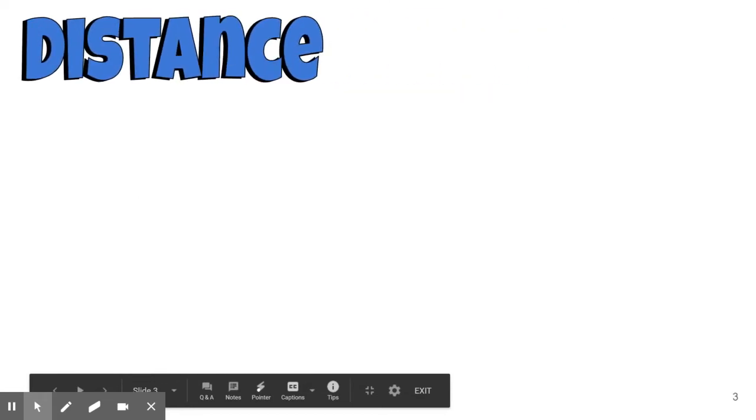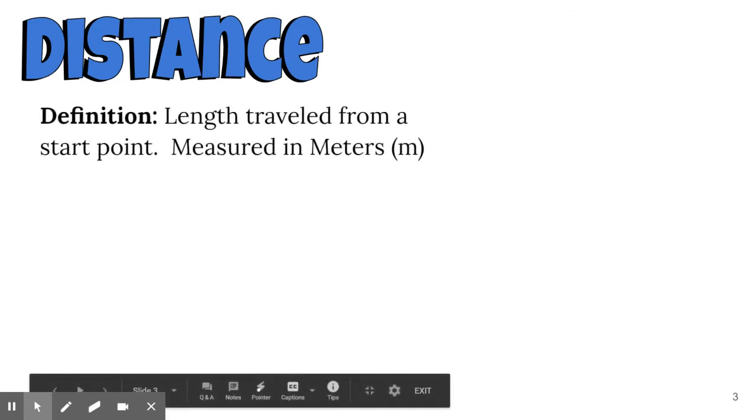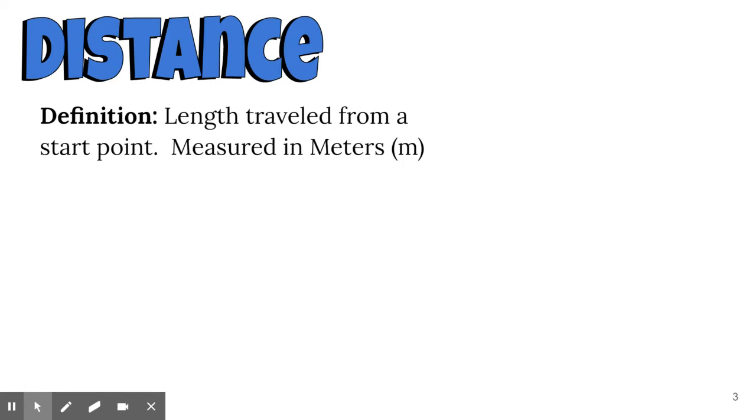The next piece is distance. Distance by definition is the length traveled from a starting point. We measure that in meters. If we started at home and went a certain distance, traveled to school or the grocery store, we can figure out how far we went by tracking our position from A to B in meters. It's really closely related to displacement, but distance is how far we've actually traveled.